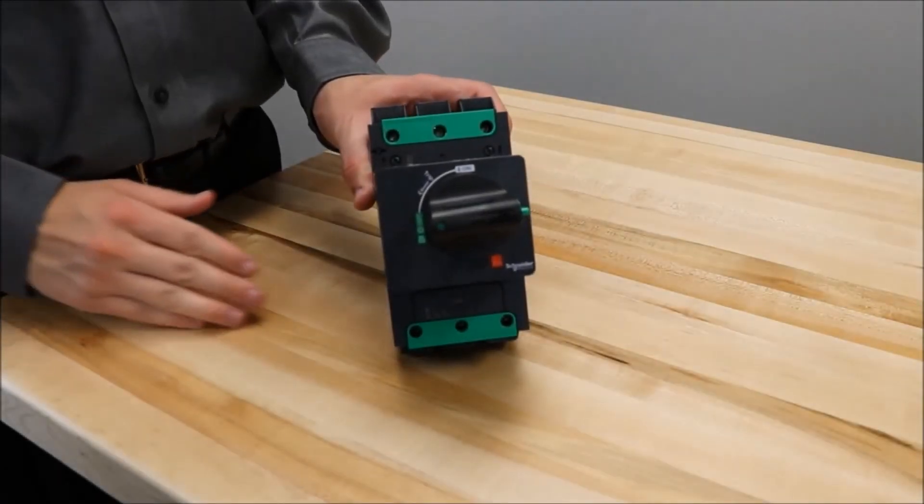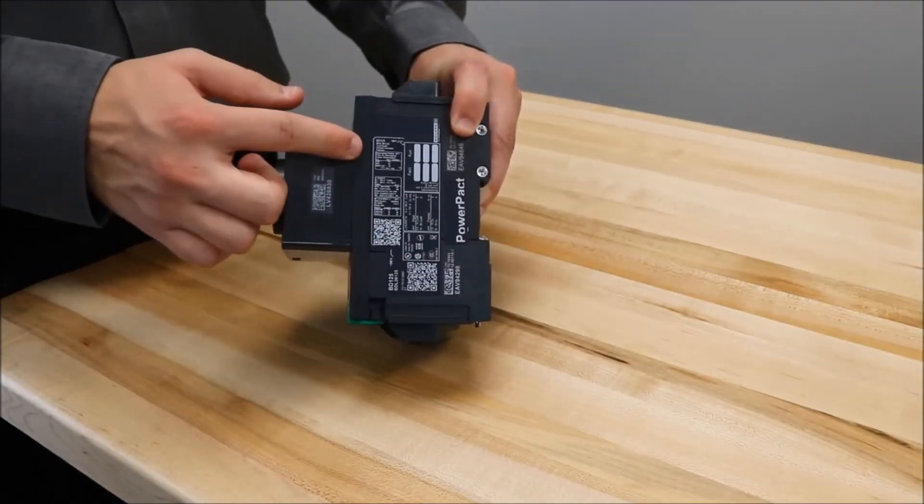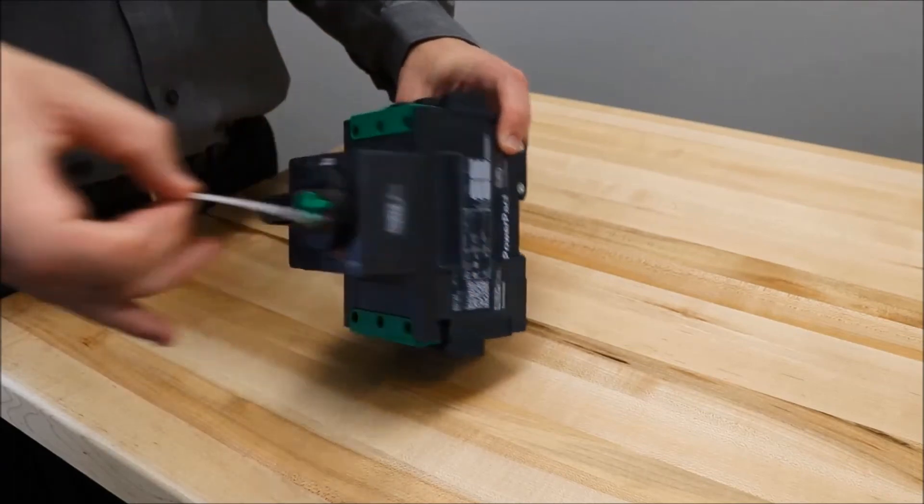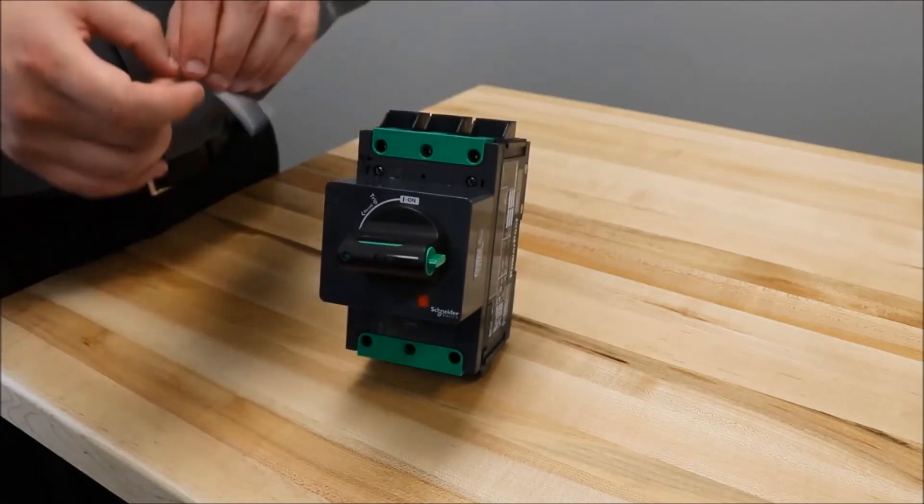Now that you have the rotary handle installed you'll remove this label from the side of the breaker and install it right here on the handle.